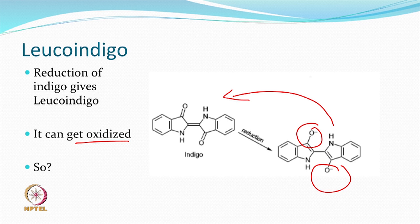If indigo is reduced, we know that you can make a leuco dye. This leuco dye, theoretically, at every opportunity can go back to its oxidized structure. So this difficulty remains — what do we do? Some suggestions could be that if this can be oxidized, then we need a way to prevent that.